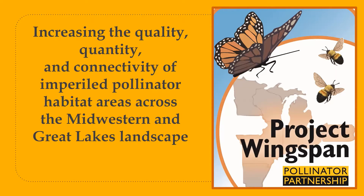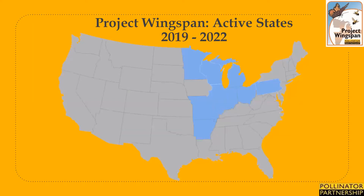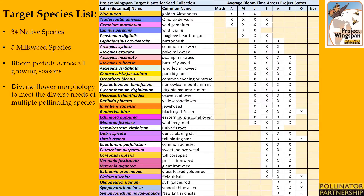The Phase 2 expansion is helping to support the overarching goal of the project, which is to increase the quality, quantity, and connectivity of native pollinator habitat across the Midwest and Great Lakes region. Through the expansion, we have extended the program into Arkansas and Minnesota, while continuing to work in Wisconsin, Illinois, Michigan, Indiana, Ohio, and Pennsylvania. While we're not currently collecting seed in Missouri, we will continue to work with land managers and landowners through the habitat survey and provide educational materials on habitat enhancement, as well as state-specific opportunities that can help to provide additional resources.